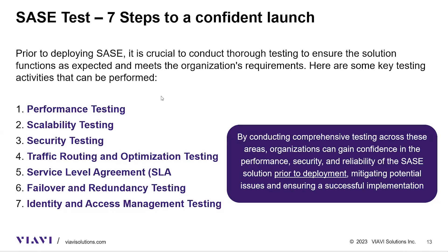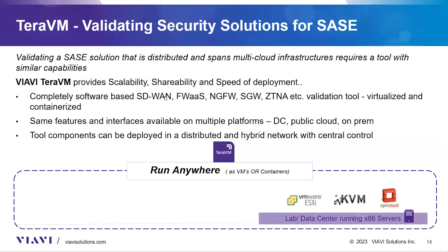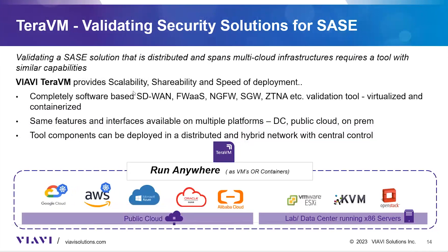Our solution, TerraVM, provides a full test suite running on x86 servers or anywhere in the cloud, offering scalable, shareable, and fast-to-deploy testing. We have a completely software-based SD-WAN, Firewall as a Service, Next Generation Firewall, Secure Gateway, and ZTNA — all elements of the SASE umbrella can be tested with our virtualized and containerized tool. We can run the same features and interfaces on multiple platforms, whether in a data center, public cloud, or on-premises, and tool components can be deployed in a distributed hybrid network with central control.